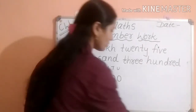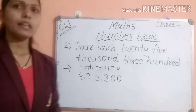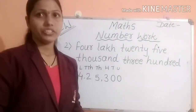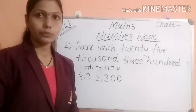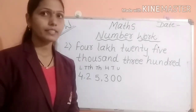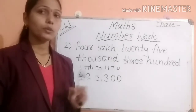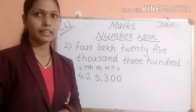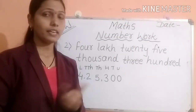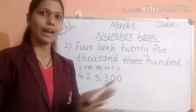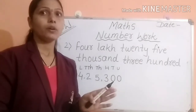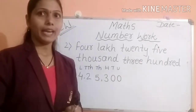Students, while counting numbers, you know that the biggest two-digit number is 99, the biggest one-digit number is 9, two-digit is 99, three-digit is 999. We only have to add one more place and repeat the same number pattern.